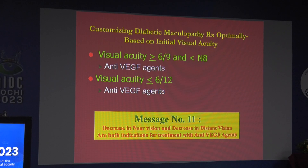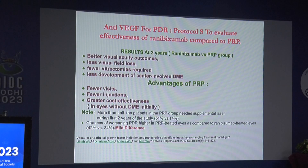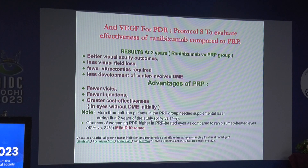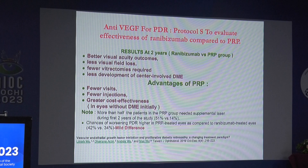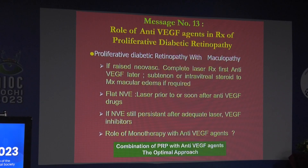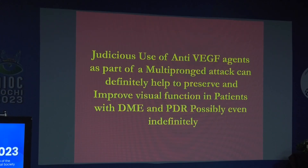Decrease in near vision or decrease in distant vision are both indicators for anti-VEGF injections. With regards to proliferative diabetic retinopathy, anti-VEGFs work well, but pan-retinal photocoagulation gives permanency to the treatment. There is a loss of field, but it has been shown that even with anti-VEGF injections on 5-year follow-up, you can have a loss of field. The role of anti-VEGFs in PDR is normally pre-surgical — it helps do surgical interventions better, peel membranes better, and combining the two is possibly the best approach. Judicious use of anti-VEGF agents as part of the multi-pronged attack can definitely help preserve and improve visual function.